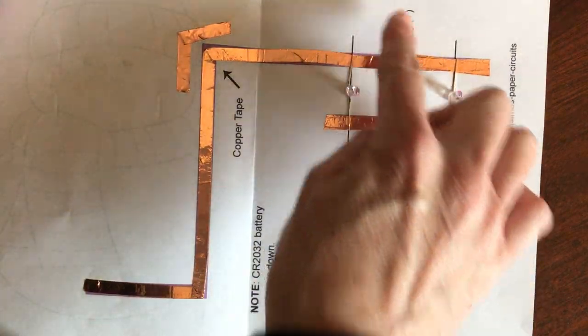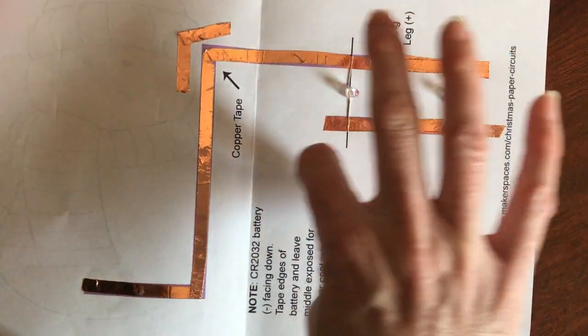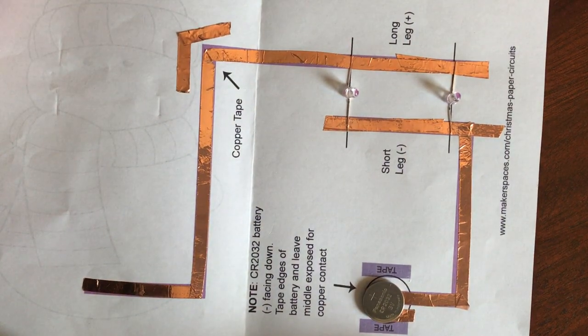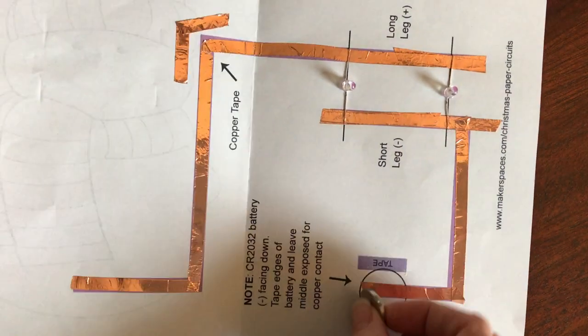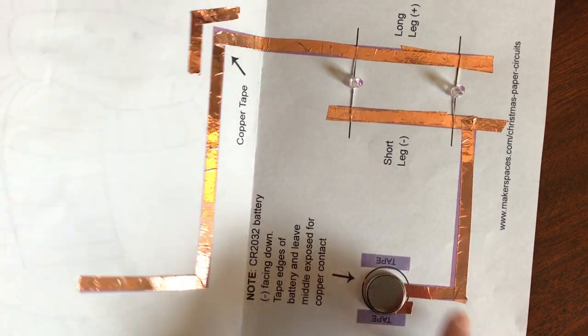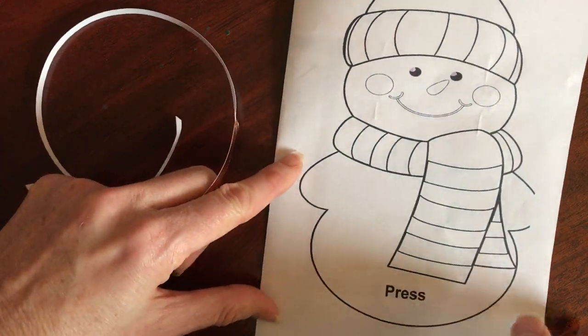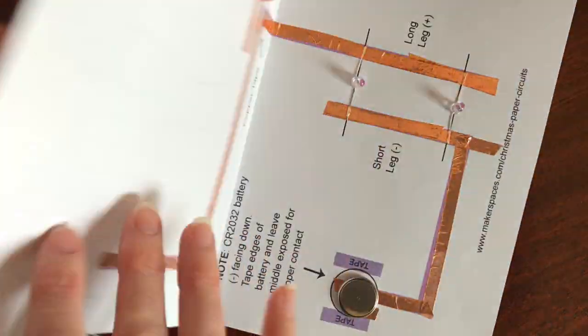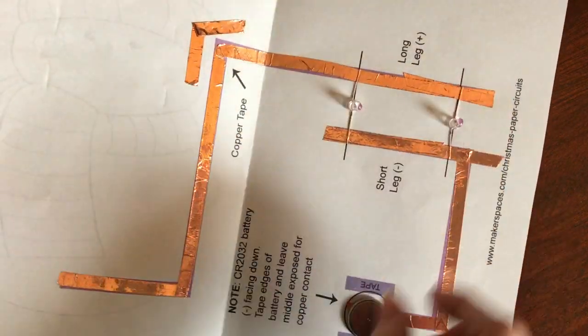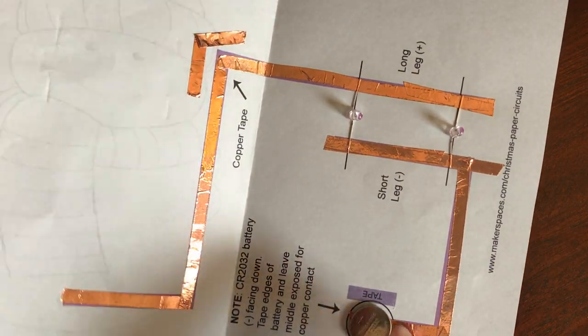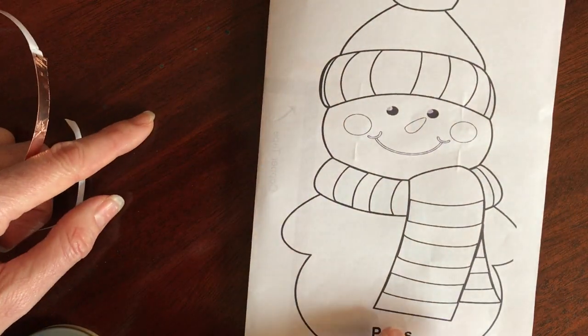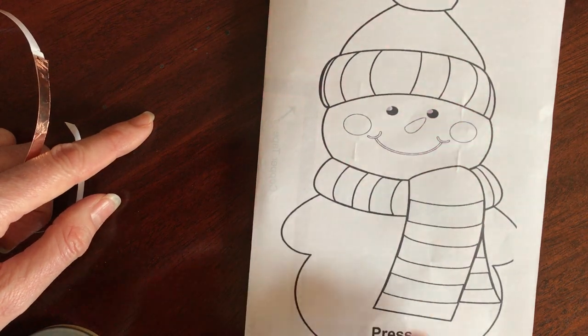Remember, make sure that you had the legs on the right side. If you accidentally put the legs backward, it might not work. In that case, you could try flipping your battery over and testing it. Mine will not work because my legs are facing the direction they were supposed to. So I have to have positive side up. All right, so try a couple different things and have fun making your light up card.